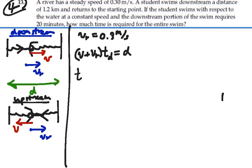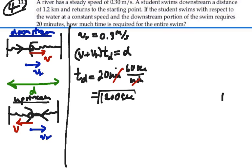We know that the time it takes to go downstream is told to be 20 minutes. So there's 60 seconds per minute, and that gives us 1,200 seconds. So knowing 1,200 seconds and knowing that our distance D is 1.2 kilometers, which is 1,200 meters,